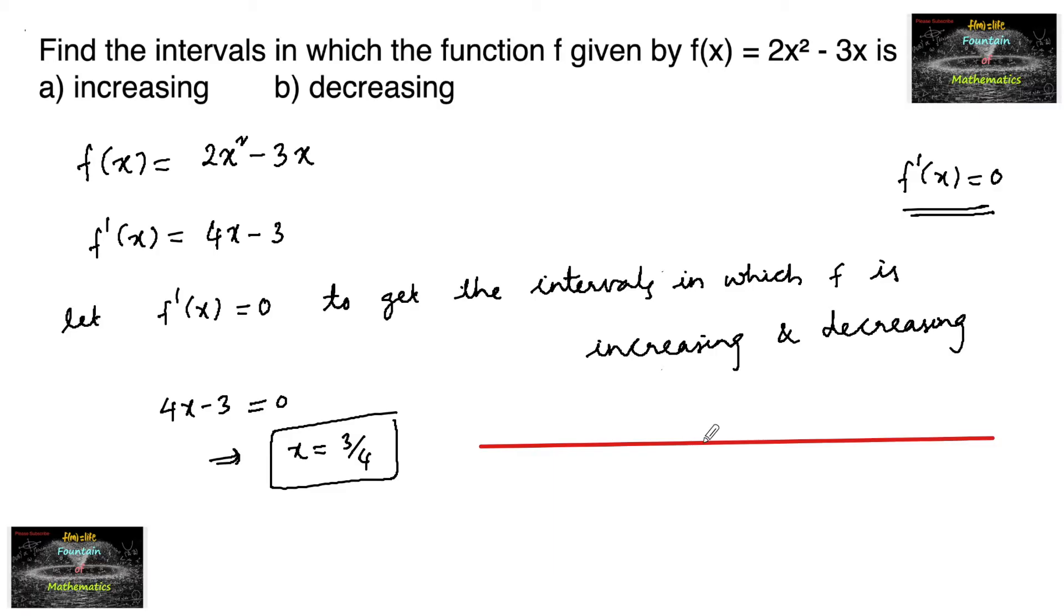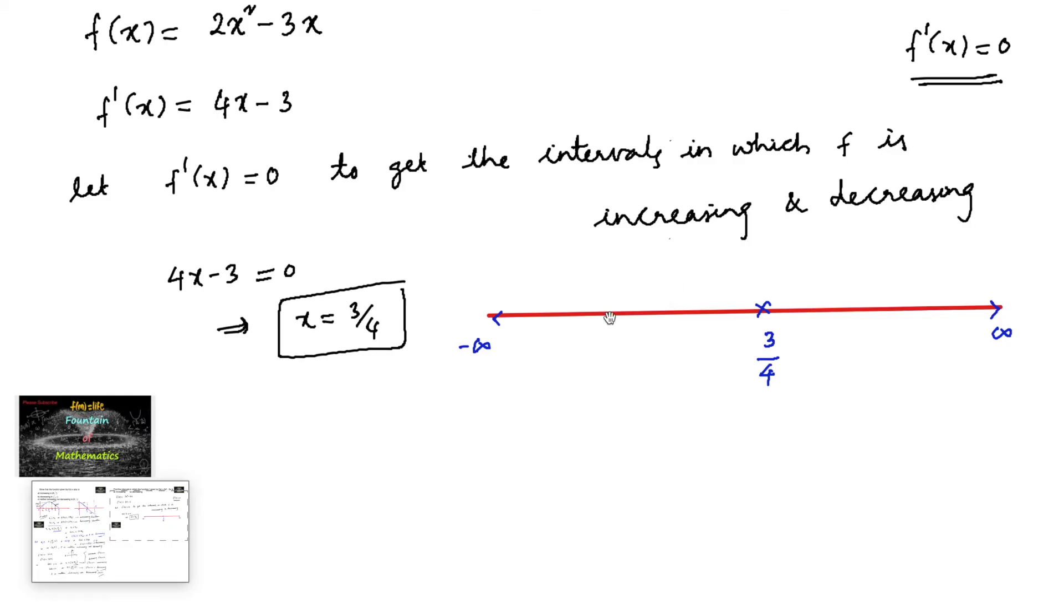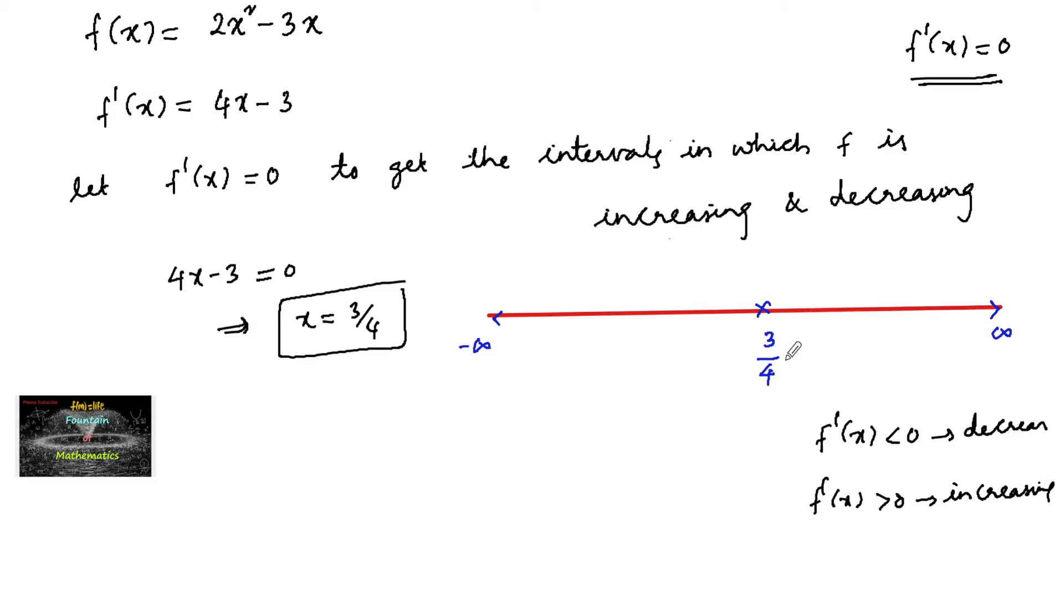From minus infinity to plus infinity on the real line. If f'(x) is negative, the function is decreasing. If f'(x) is greater than 0, it's increasing. So here, 3/4 is nothing but 0.75.